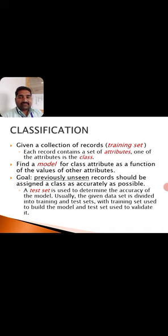In classification methods, we're given a collection of records as training sets, and each record contains a set of attributes where one attribute is the class. We have to find a model for class attributes as a function of the values of the other attributes. The main goal is that previously unseen records should be assigned a class as accurately as possible.